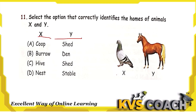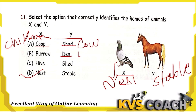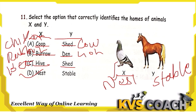Question 10: Identify the homes of animal X (pigeon) and animal Y (horse). Pigeon's home is a nest and horse's home is a stable. Option D is the right answer. Other homes mentioned: coop is for chickens, shed for cow, den for lion, burrow for rabbit, and hive for bees.